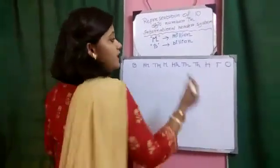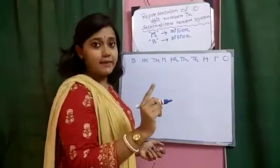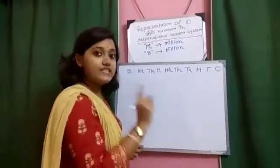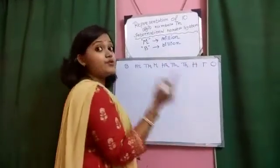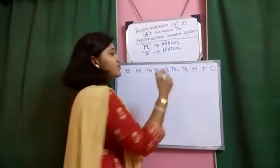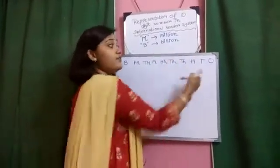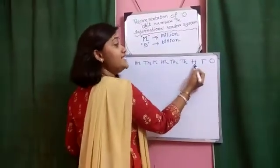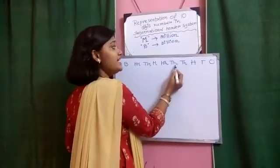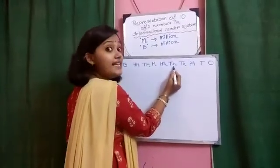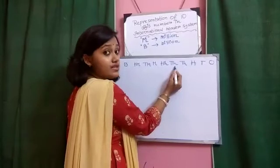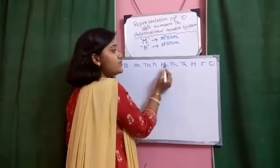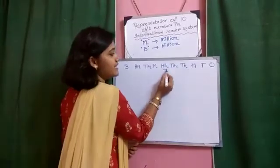Okay, so let us focus on the board. In international header system, we are going to represent a 10-digit number. So, first step to write down the headers. We are starting from right side, you know the golden rule. So, once, tens, hundred, thousand, ten thousand. Till this much, it is absolutely same with Indian header system. Now, the change is from here.